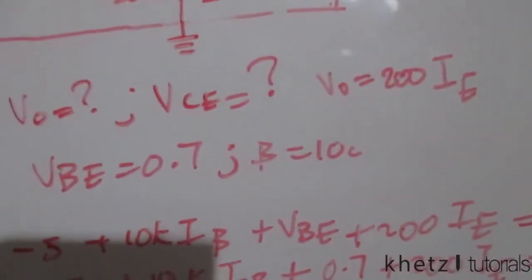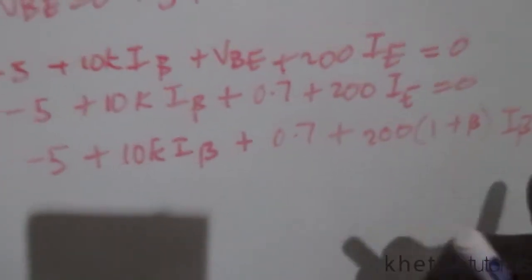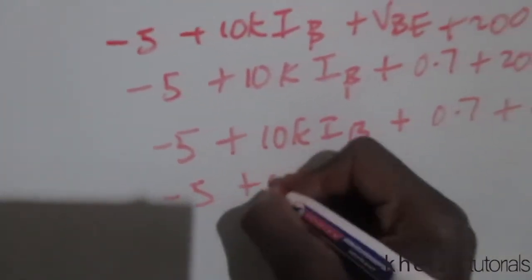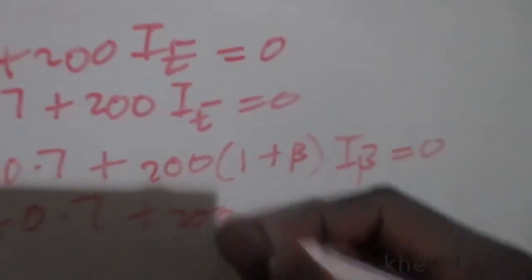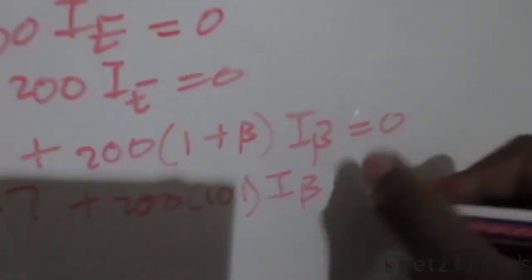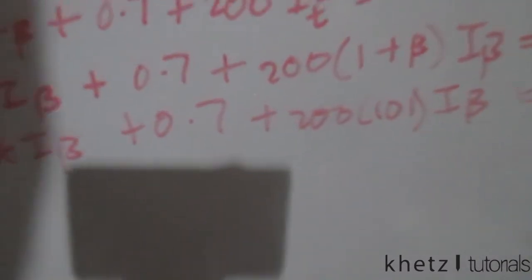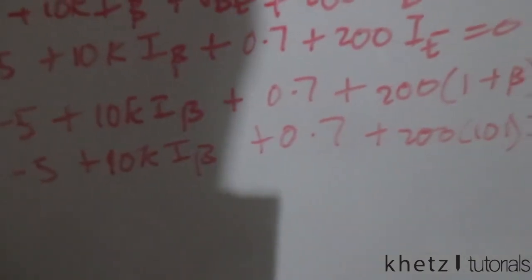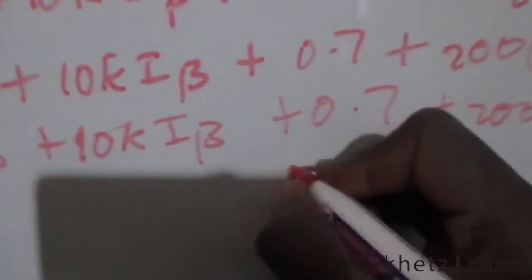vbe = 0.7 and beta = 100 are given. Substituting beta = 100, we get (1 + 100) = 101. So the equation becomes: negative 5 plus 10k·i_beta plus 0.7 plus 200 × 101 × i_beta = 0. Grouping the i_beta terms: 200 × 101 plus 10,000 = 30,200, so we have 30,200·i_beta.